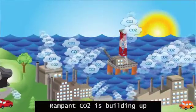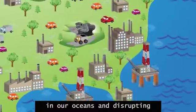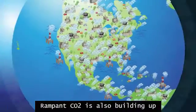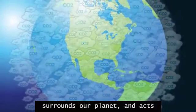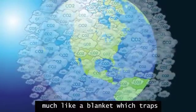Rampant CO2 is building up in our oceans and disrupting nature's balance. Rampant CO2 is also building up in our atmosphere, where it surrounds our planet and acts much like a blanket which traps heat.